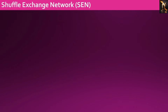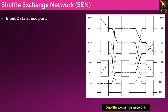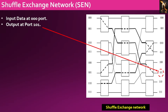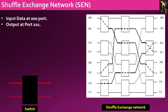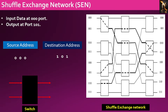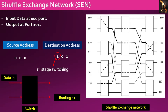Let us now understand the operation of the shuffle exchange network with an example. Consider data at port 000 with the destination port marked as 101. The destination port address serves as the routing information for each stage. The first bit from the left, MSB, of the destination address corresponds to the first stage switching action. In this case it is 1, and consequently the data at port 000 is routed to the lower output port.